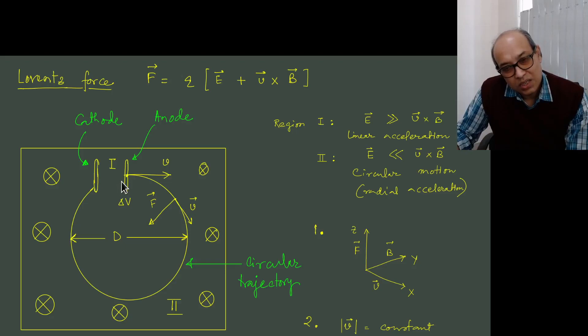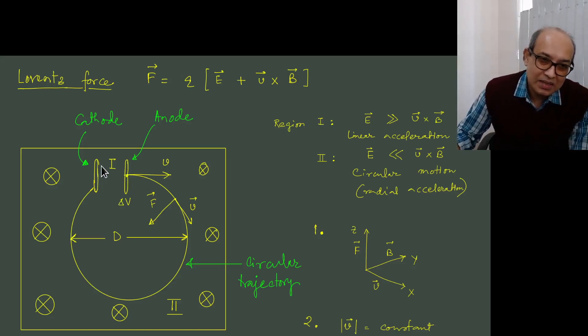Now these negatively charged electrons as they are attracted towards the positively charged anode, if you have a small hole in the anode then some of the electrons pass through this hole and become an electron beam. Now you see in this anode, the electric field is very strong.